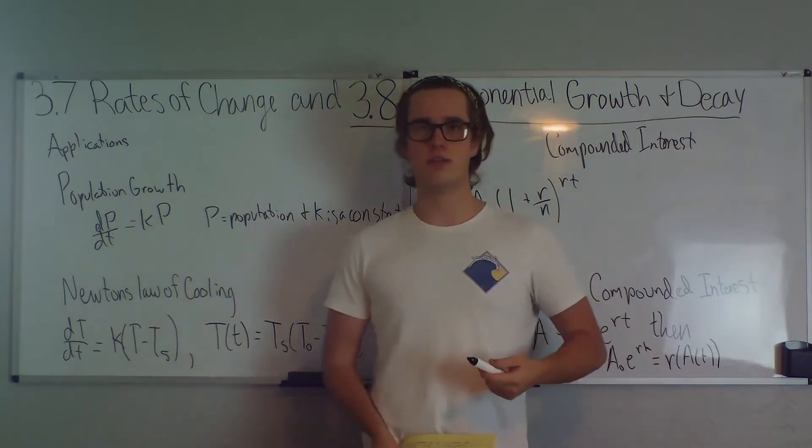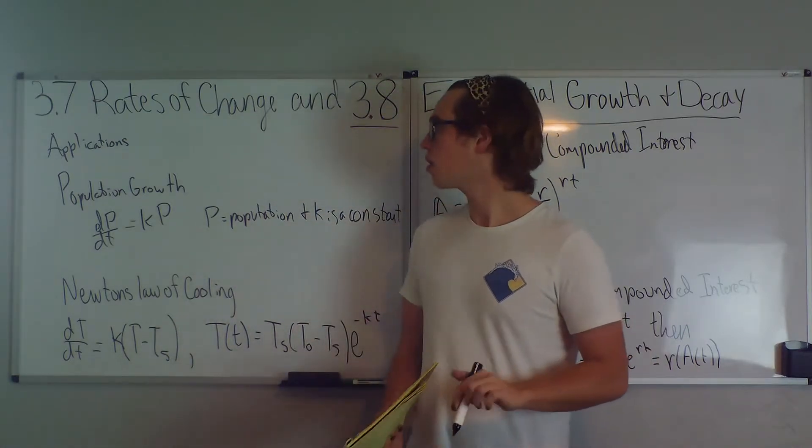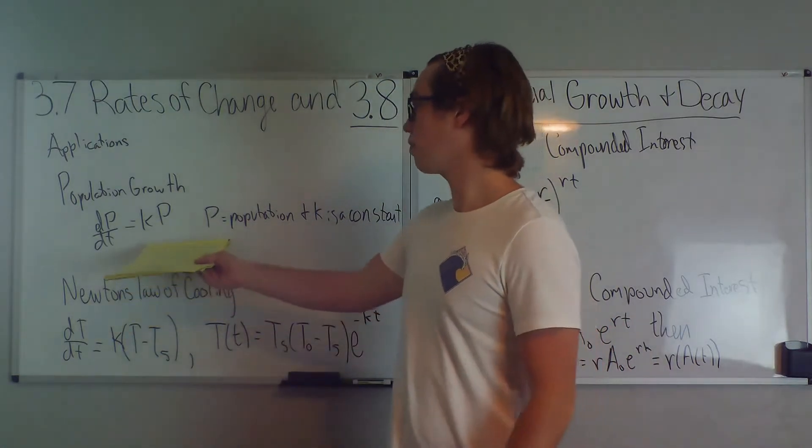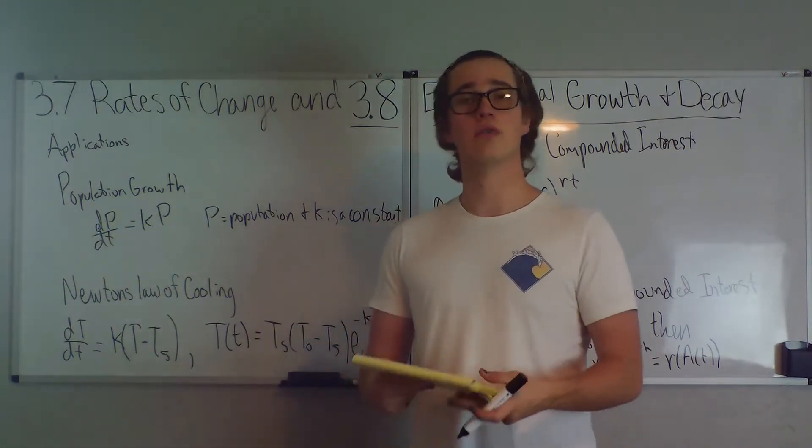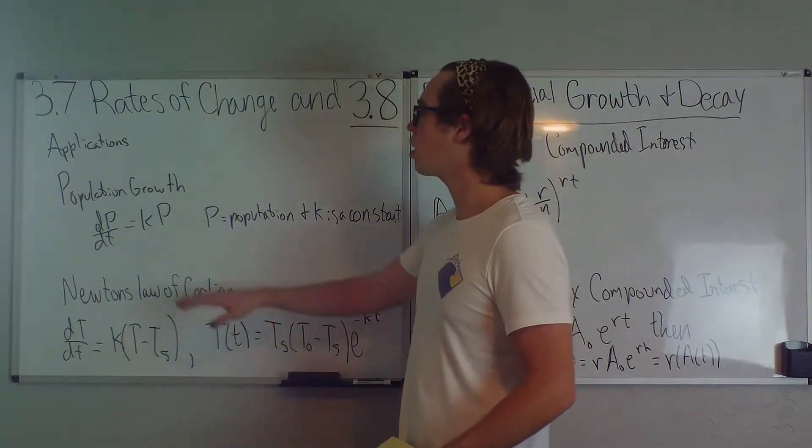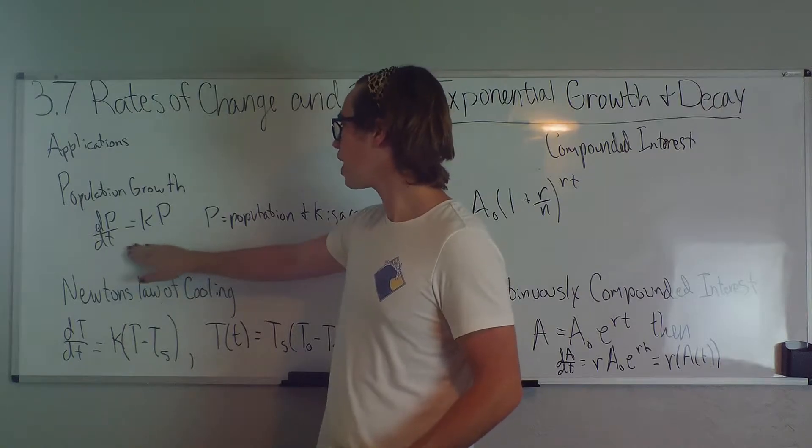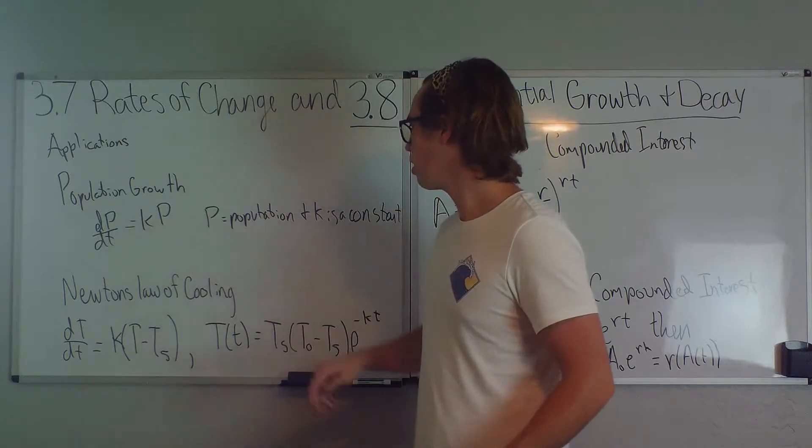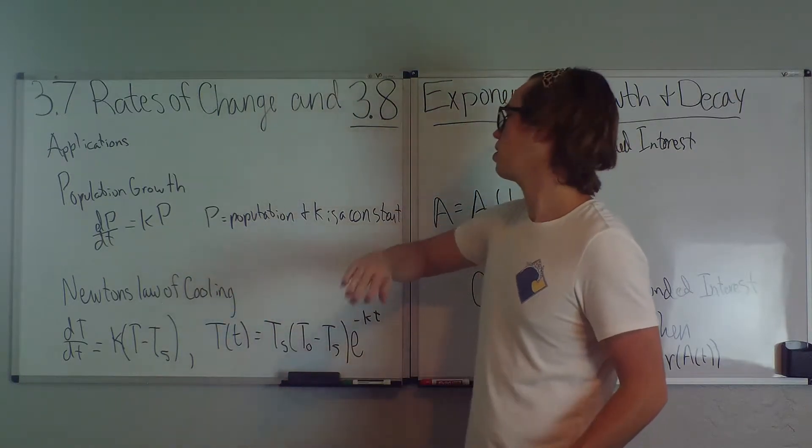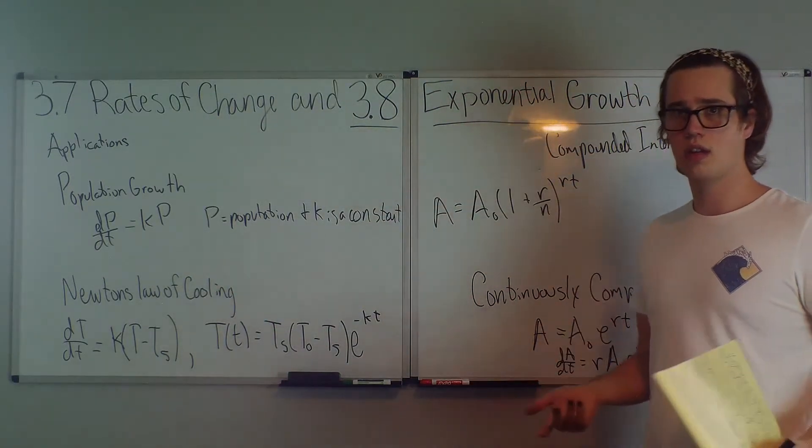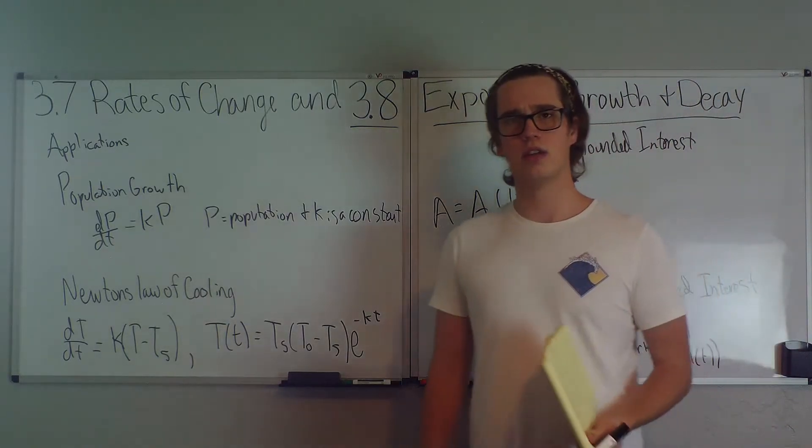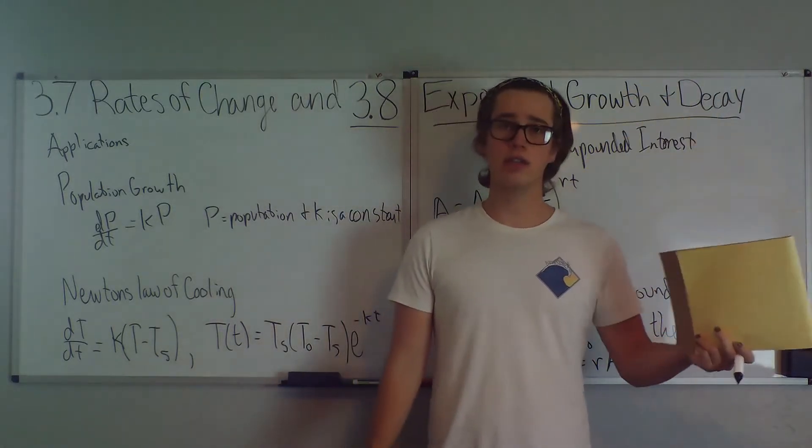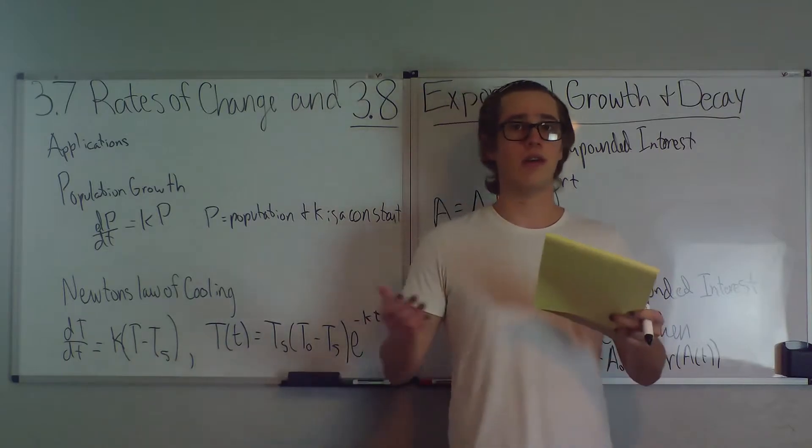What are some applications for exponential growth and decay? Well, first one, population growth, or population decay. The change in population would be dp over dt is equal to kp. And what is p? p is the population, and k is just a constant number. And that's how much the population is either increasing or decreasing based on whatever.